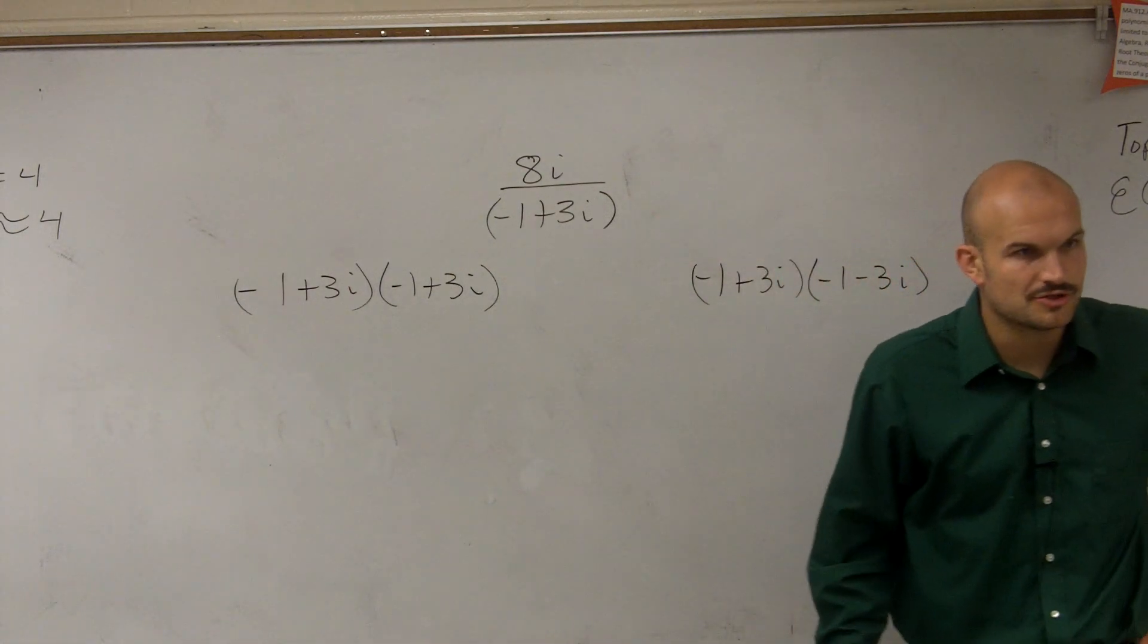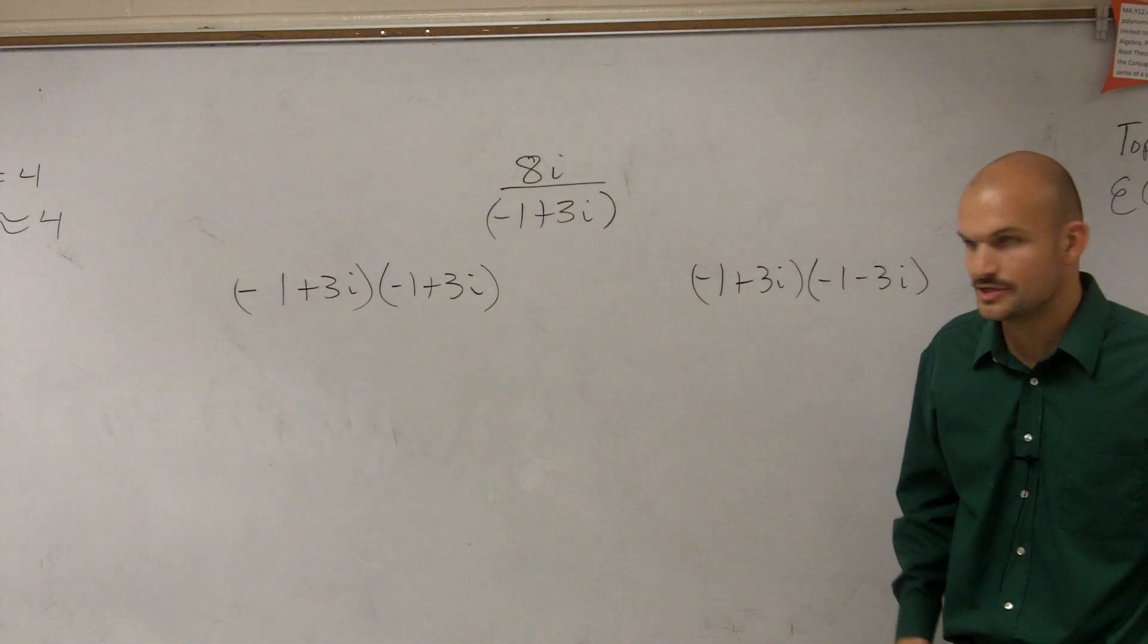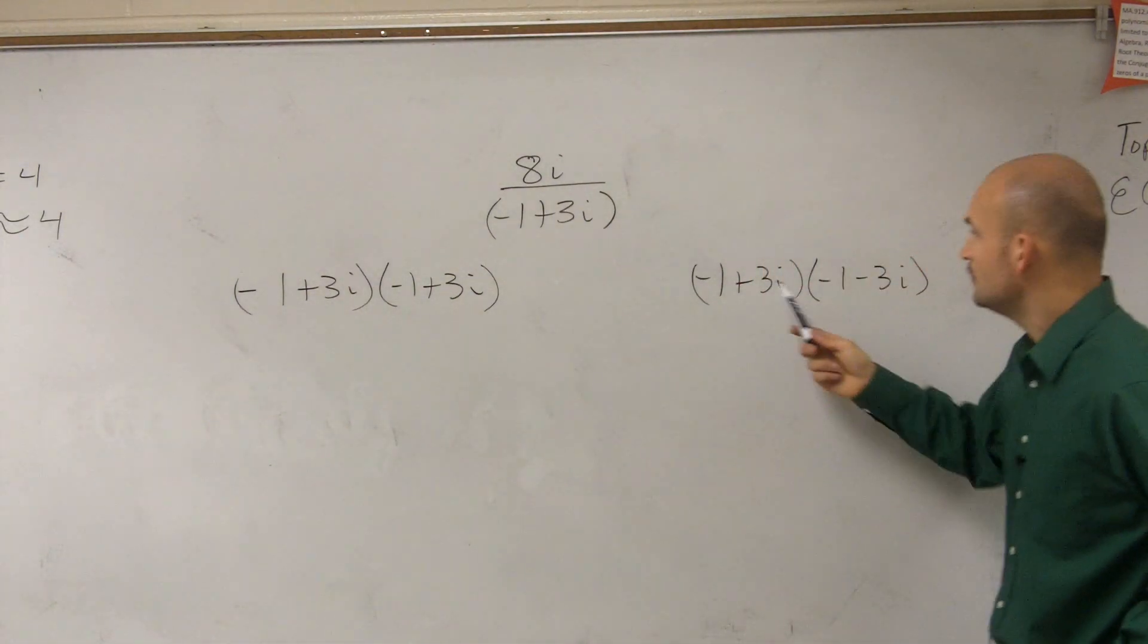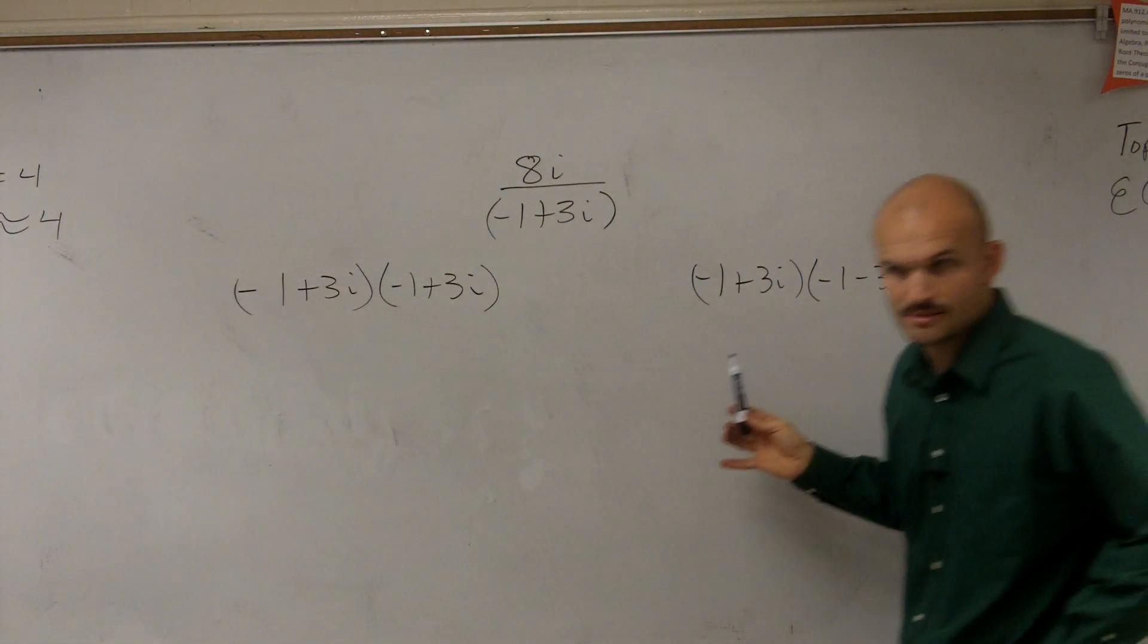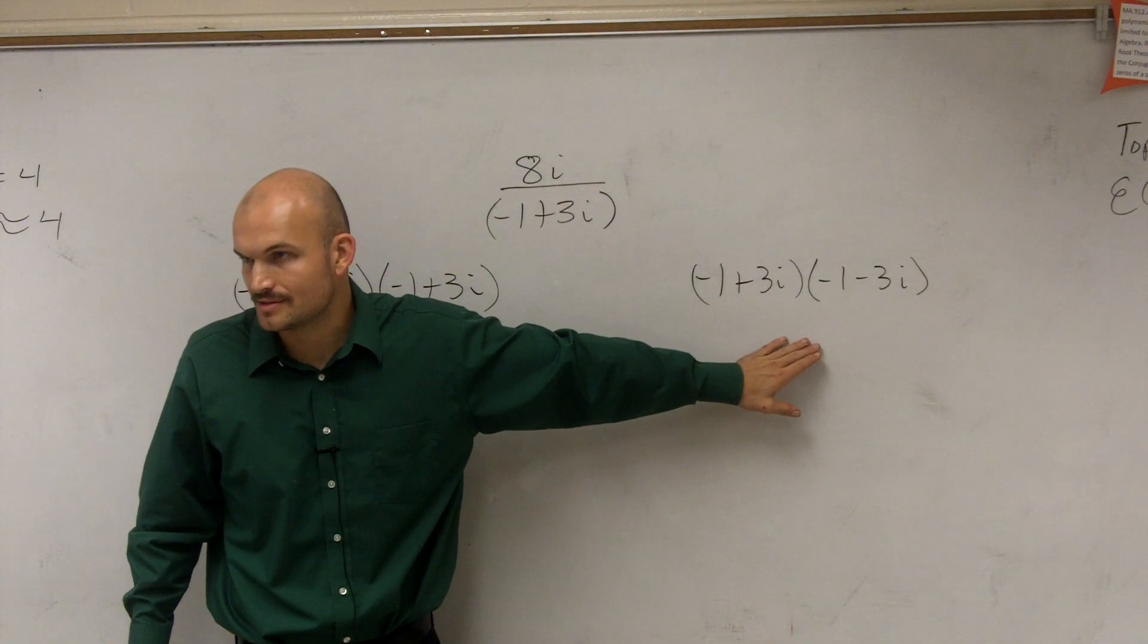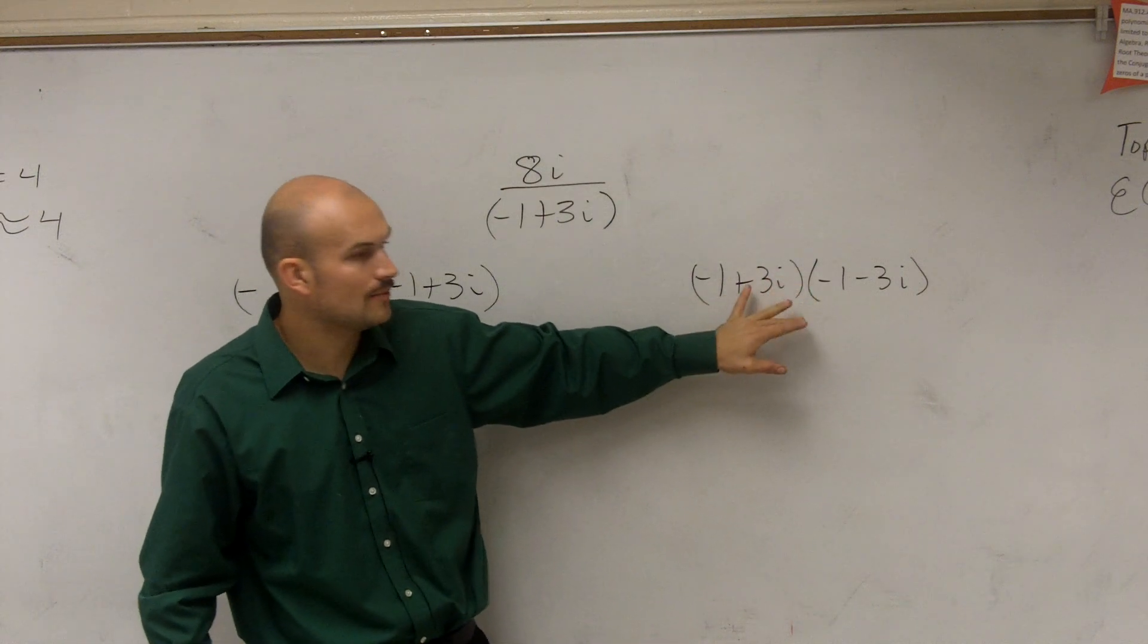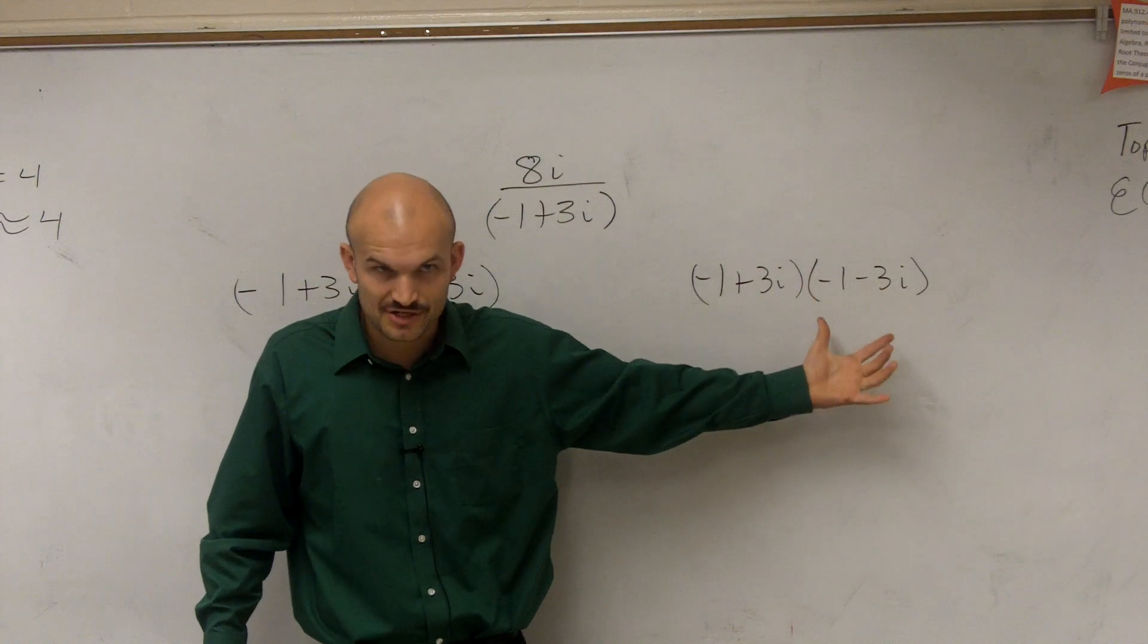If you guys notice, there's a difference between these two problems, right? I'm talking about the multiplication problems right now. There's a difference between these two. These two are exactly the same. These two are exactly the same, except for the addition and subtraction symbol, correct? These are what we call conjugate pairs. They're the exact same, but one is you're adding the terms, and one you're subtracting the terms. So they're your conjugate pairs.